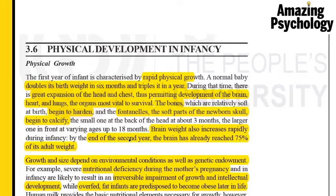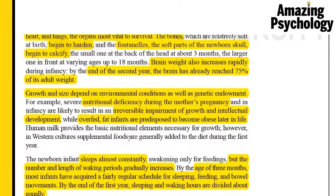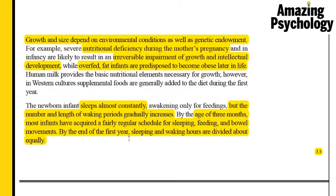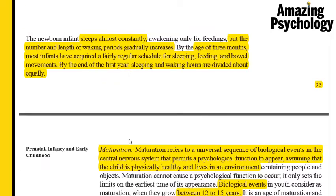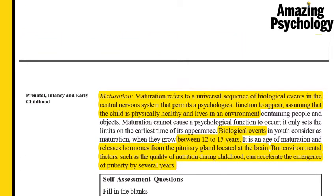So we've finished the physical factors in the development of infancy. We looked at different types of growth in weight, chest size, and brain weight; factors influencing growth such as nutritional deficiency and overfeeding; the child's tendencies during the initial years — sleeping, eating, and bowel movement — and finally maturation, which is a universal sequence of biological events in the central nervous system that permits a psychological function to appear. If you have any questions, please leave them in the comment section below, and please do like, share, and subscribe. Thank you so much — see you in the next class.